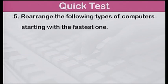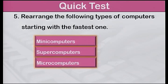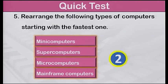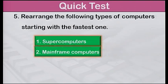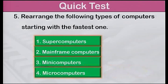Number 5: Rearrange the following types of computers starting with the fastest one — mini-computers, supercomputers, microcomputers and mainframe computers. The answer is: first supercomputers, second mainframe computers, third mini-computers, and fourth microcomputers.